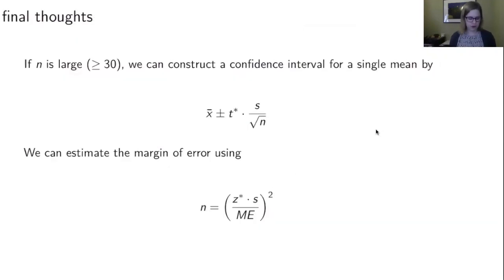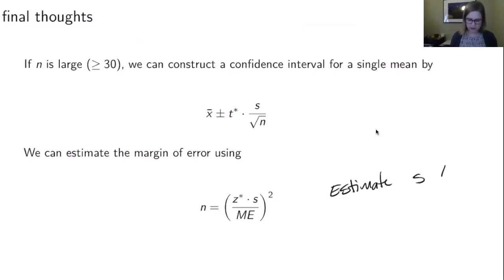For our final thoughts: if n is large, like greater than or equal to 30, we can construct a confidence interval as x bar plus or minus t* times s over the square root of n. We can estimate our sample size needed for a given margin of error using n equals (z* times s over margin of error) squared. And we can estimate s by the range over four.